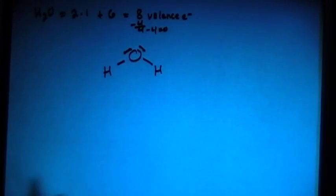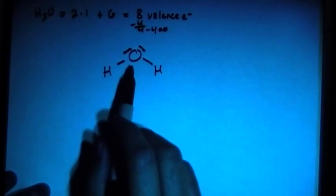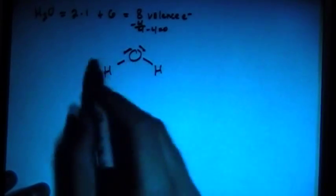So that's what the Lewis dot structure looks like. Basically, based on this drawing, the oxygen is the center atom.